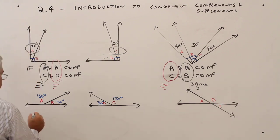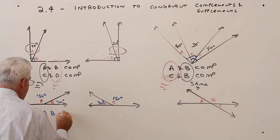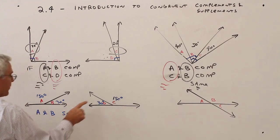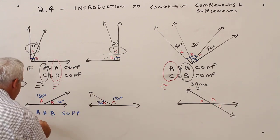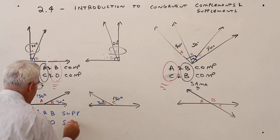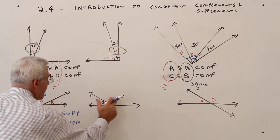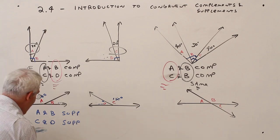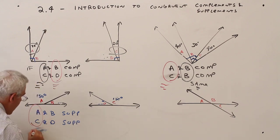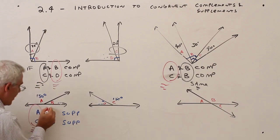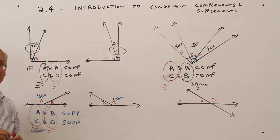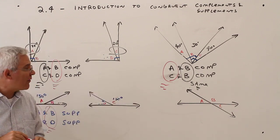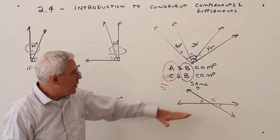Same thing going on here: if A and B are supplementary, and C and D are supplementary, and I know that A and C are congruent, then B and D must also be congruent. That's all I'm saying.